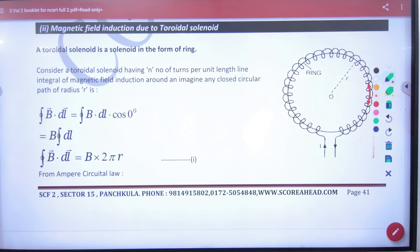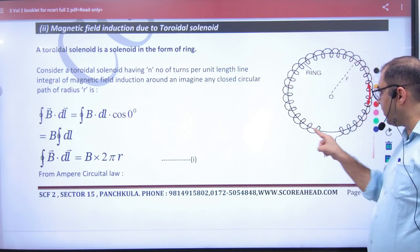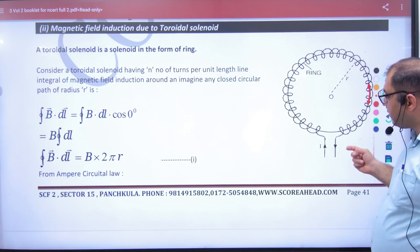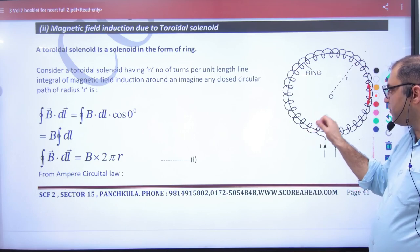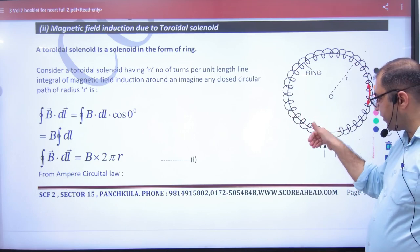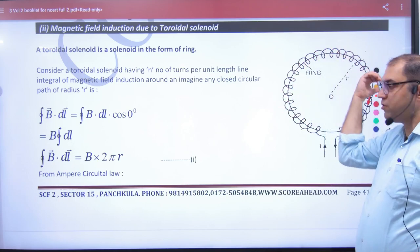Where do you have to take B? Take it on the axis. If you think that the current is going like this, you are looking at the direction and the direction of B is like this.